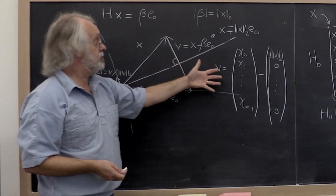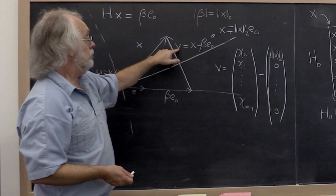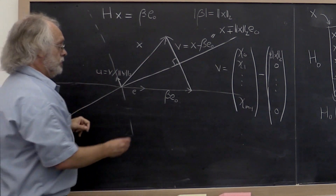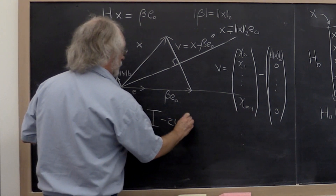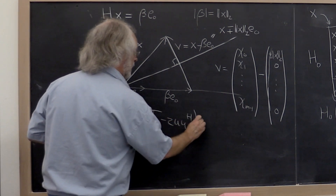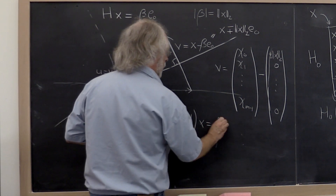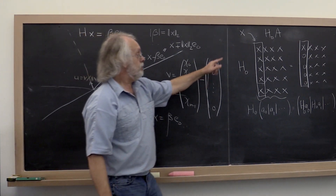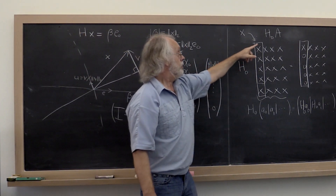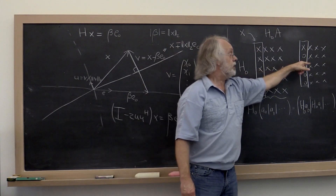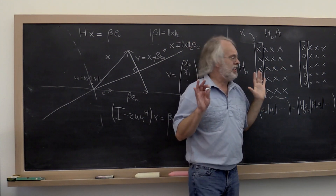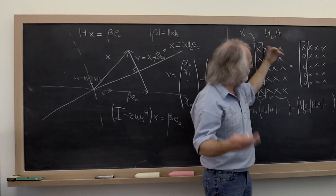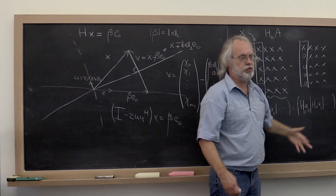We now have a simple formula for computing vector v, from which we can compute vector u, so that (I minus 2·u·u^H) times x equals β times e0. With that, we can make the first step towards reducing A to an upper triangular matrix. It's not a square matrix, so we'll end up with an upper triangle with some zeros below it.